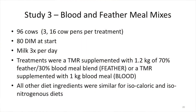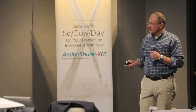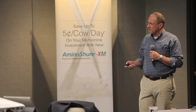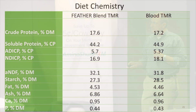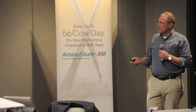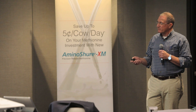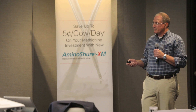But we wanted to redo this study. That's where Martina comes in. 96 cows, 3 pens of 16 cows each, about 80 days of milk to start, milked 3x. Treatments were about 1.2 kilos of a 70% feather meal / 30% blood meal blend, or one kilo of blood meal. Everything else was similar for isocaloric and isonitrogenous diets. What was different about this is that we didn't drop the protein way down like we did in the first study — this is: does digestibility mean anything when you're not cranking down the protein?